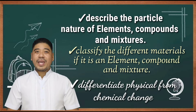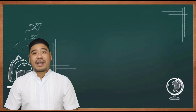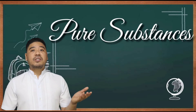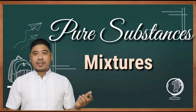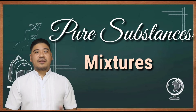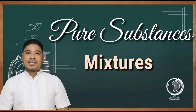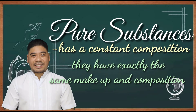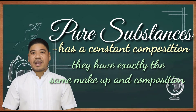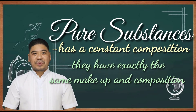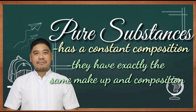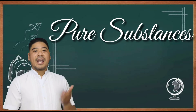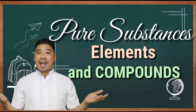We can classify matter into several categories. Pure substances and mixtures are two broad categories. A pure substance has a constant composition — they have exactly the same makeup and compositions. We can divide pure substances into two classes: elements and compounds.